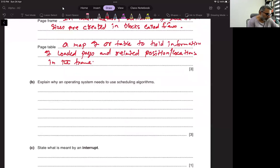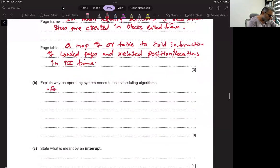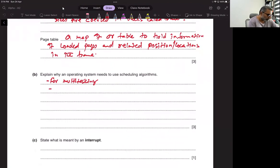So explain why operating system needs to use scheduling algorithm: System for multi-tasking, for multiple programs to share the processor, so that a schedule to execute